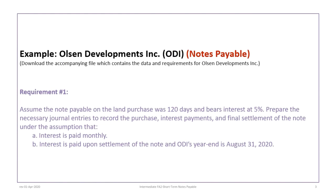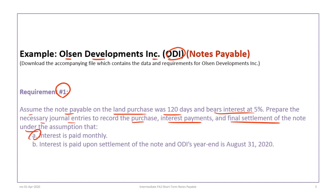This tutorial is based on the Olson Developments Inc. (ODI) problem which covers notes payable, so please download the accompanying file which contains the data and requirements. For requirement 1, we assume the note payable on the land purchase is 120 days and bears interest at 5%. We need to prepare journal entries to record the purchase, interest payments, and final settlement under two assumptions: one, interest is paid monthly, and two, interest is paid upon settlement of the note, with ODI's year-end on August 31st.